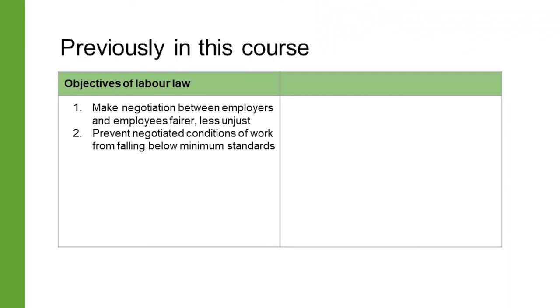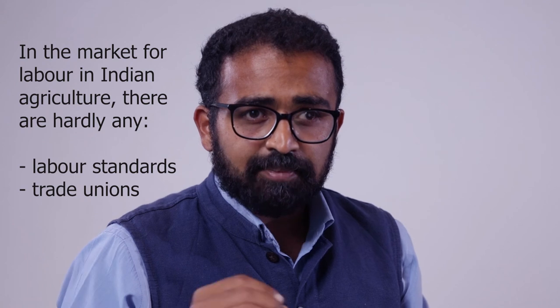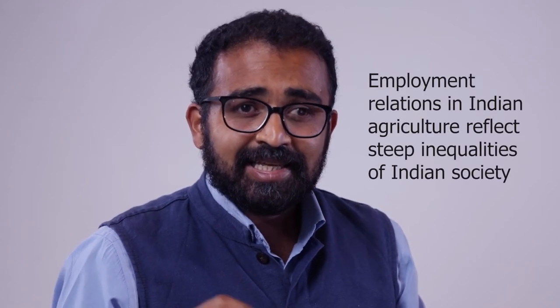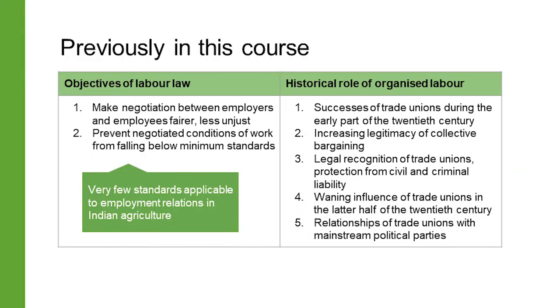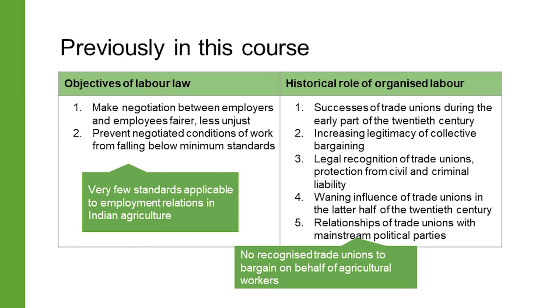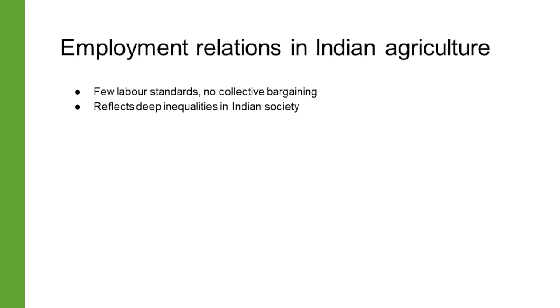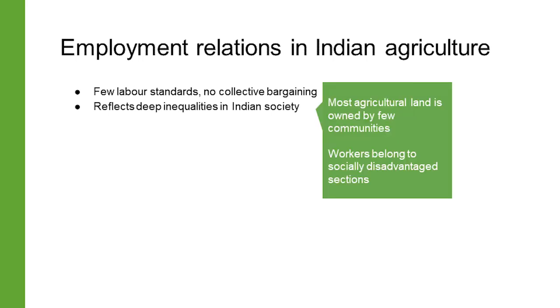In the first module of this course, you learned about the central role that labor law plays in making work more humane and the role of collective action in advocating for decent work. Now imagine a market for labor where there is neither any labor law nor any collective action — no minimum standards for the employment relationship, and no trade union to bargain collectively on behalf of workers. This nightmare scenario is almost entirely true of the market for labor in Indian agriculture. Except for some overarching laws such as the minimum wages law, there are few standards applicable to agricultural employment.